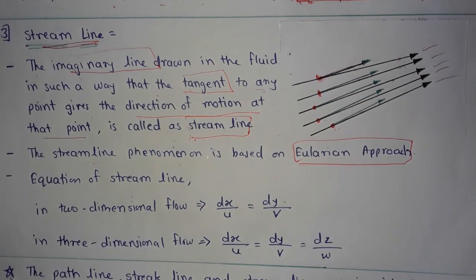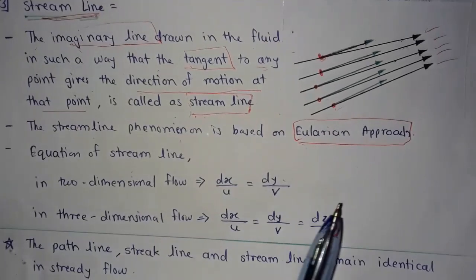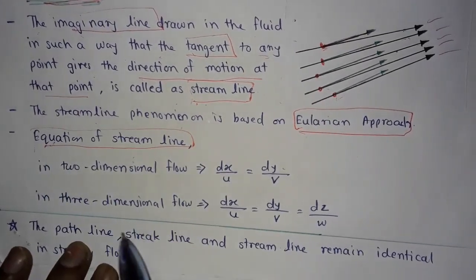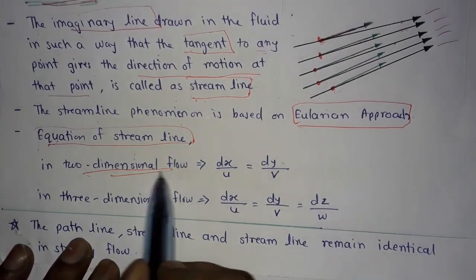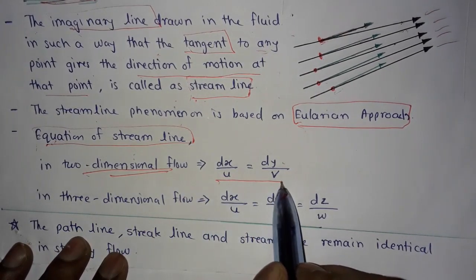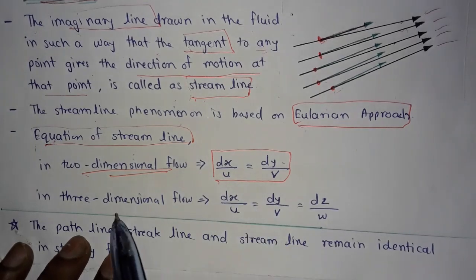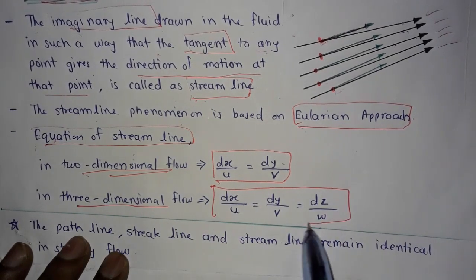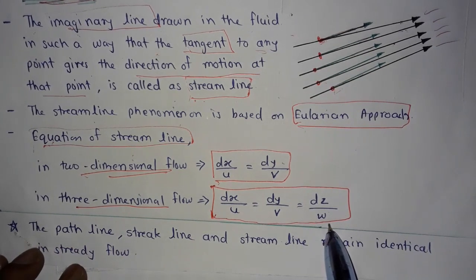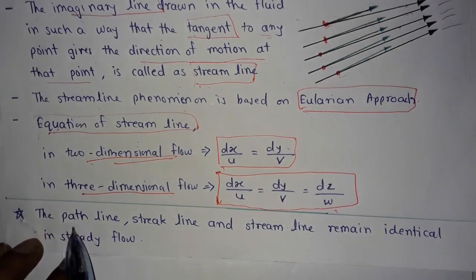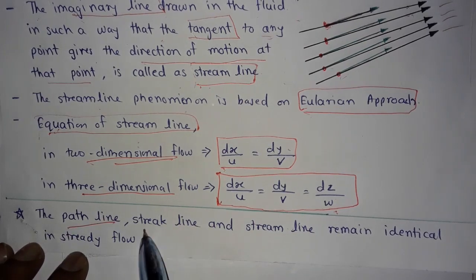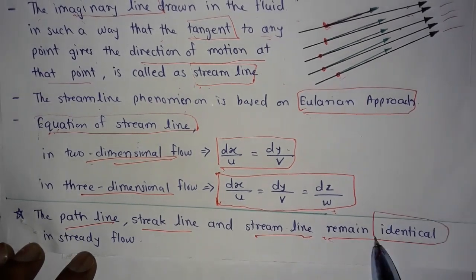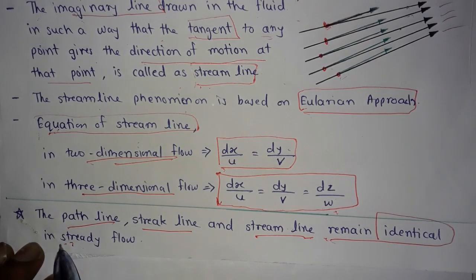The equation of streamline in two-dimensional flow is dx/u = dy/v, and in three-dimensional flow it is dx/u = dy/v = dz/w. The path line, streak line, and streamline remain identical in steady flow.